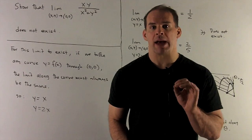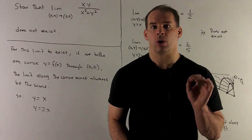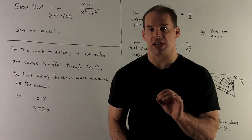Show that the limit as (x,y) goes to (0,0) of xy over (x² + y²) does not exist.